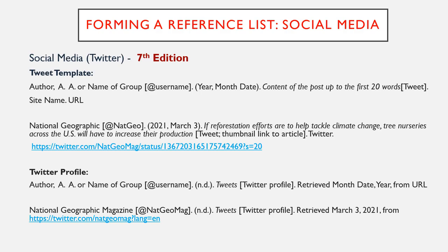Citing social media such as Twitter: to cite a tweet, include the author's last name or name of group, username in square brackets, year, month, and date, the content of the post up to 20 words, and indicate it as a tweet in square brackets. Include the site name and URL. Note that if the tweet includes images, videos, or links to other sources, indicate that information in square brackets after the content description. Also, attempt to replicate emojis if possible.